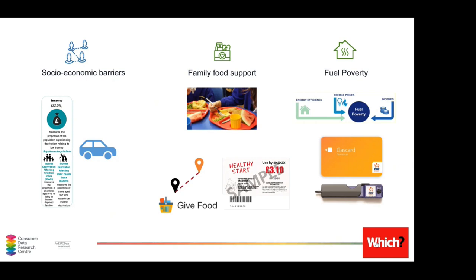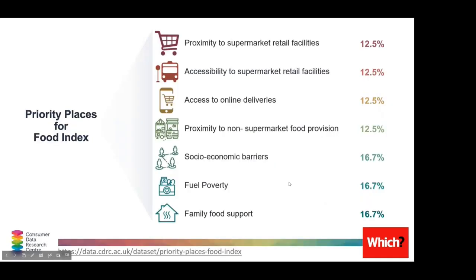Within the food support domain we also include distance to the nearest food bank, calculated the same way as supermarket proximity. Finally, we're conscious that this winter fuel poverty is also going to be a significant burden on household budgets. We used devolved government calculator statistics for estimating fuel poverty — regression models taking into consideration energy prices, income and energy efficiency data — and also included a measure of the prevalence of prepayment meters within those neighbourhoods, which often reflect both higher costs of fuel and greater heating insecurity.